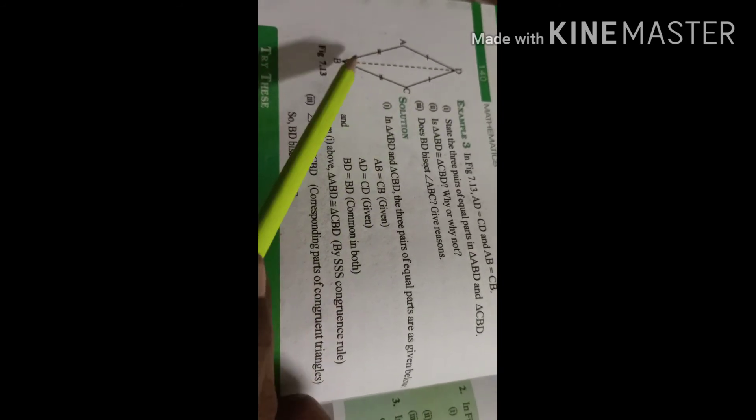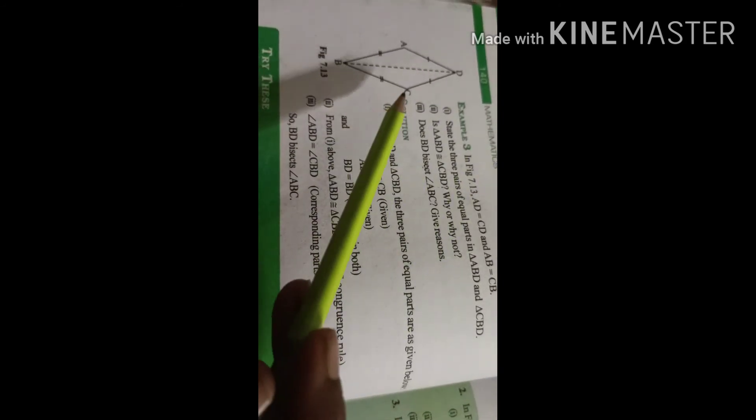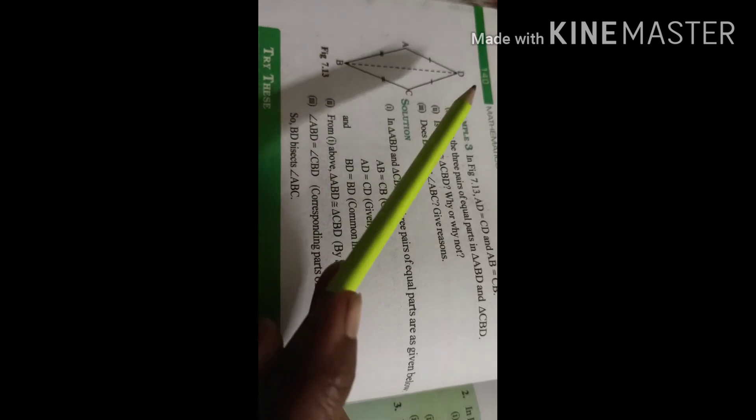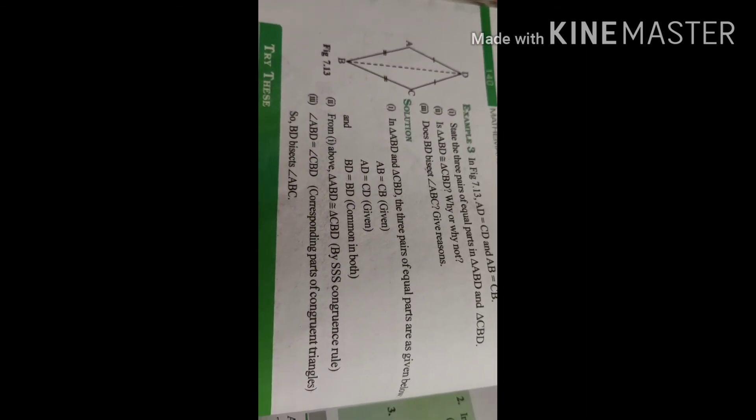Angle ABD is equal to angle CBD—corresponding parts of congruent triangles. If all the sides are congruent to each other, then all the angles are congruent to each other. That is why angle ABD is equal to angle CBD. What we can say? BD bisects angle ABC. The whole angle ABC is bisected by the line segment BD. This is all about your example three.